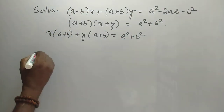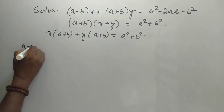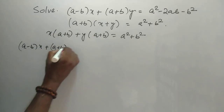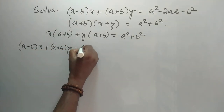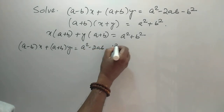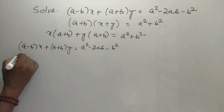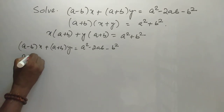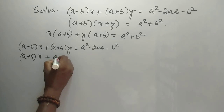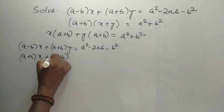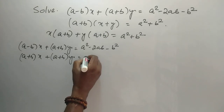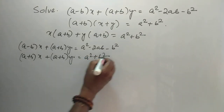Comparing first to second: (a minus b) x plus (a plus b) y is equal to a squared minus 2ab minus b squared, and (a plus b) x plus (a plus b) y is equal to a squared plus b squared.